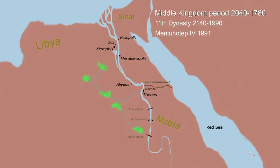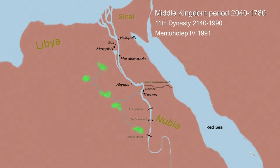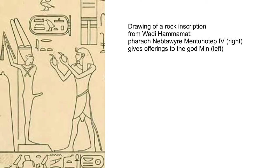Mentuhotep IV succeeded the throne only on some king lists. He sent his military general down the Wadi Hamamat to look for a stone suitable for the lid of his crypt. Apparently the general, Amenemhat, returned with the stone lid and brought it to Thebes.